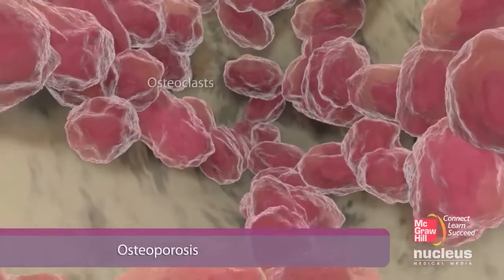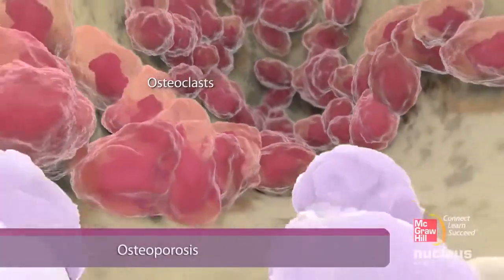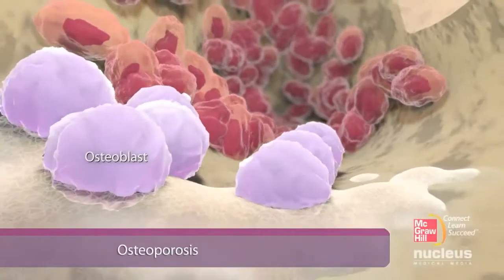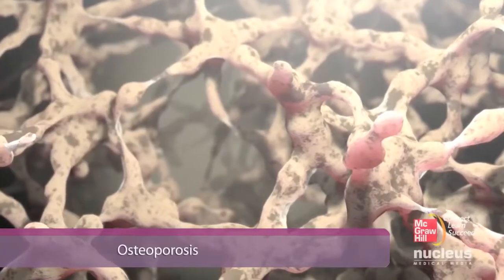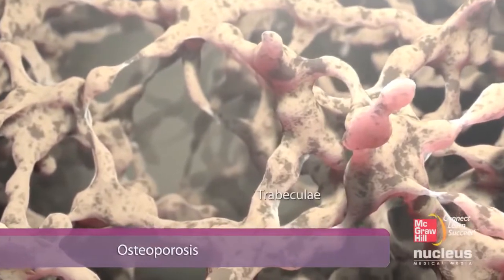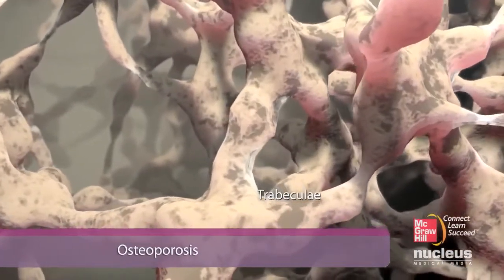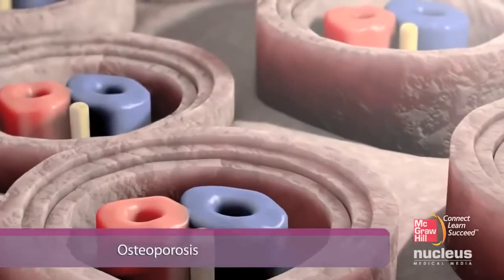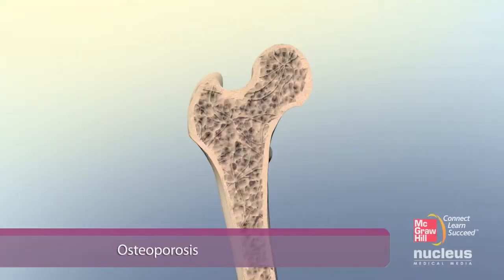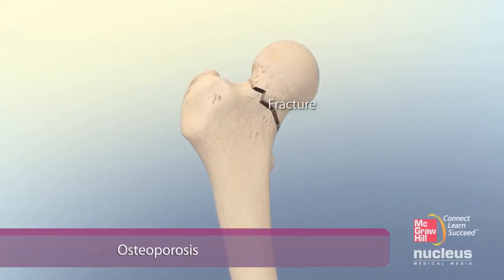Osteoporosis is a progressive disease in which the rate of bone resorption exceeds bone formation. As a result, the trabeculae in cancellous bone become fewer and farther apart. The compact bone thins, and overall, the bone becomes weak, fragile, and prone to fractures.